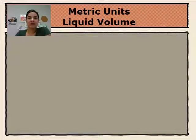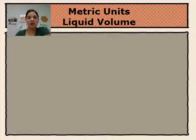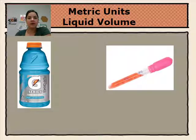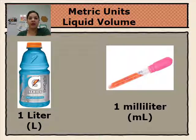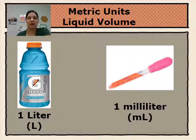Now we're going to talk about the metric units of liquid volume. We can use one liter or one milliliter to measure liquid volume. One liter is equivalent to a Gatorade bottle. One milliliter is equivalent to one drop out of a medicine dropper or eyedropper, so a milliliter is a very, very small amount.